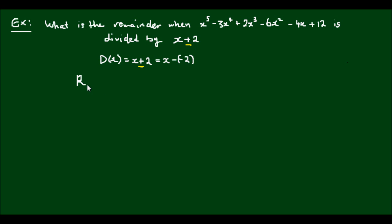So then the remainder according to the remainder theorem is just equal to the polynomial evaluated at the constant of the divisor, which is when x is equal to negative 2. So plugging that in we've got negative 2 to the power of 5, minus 3 times negative 2 to the power of 4, plus 2 times negative 2 to the power of 3, minus 6 times negative 2 to the power of 2, minus 4 times negative 2, plus 12.